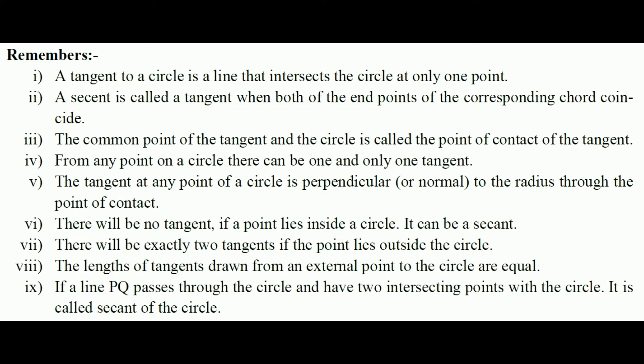Point 3: The common point of the tangent and the circle is called the point of contact of the tangent. Point 4: From any point on the circle, there can be one and only one tangent.